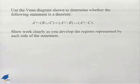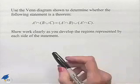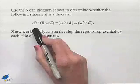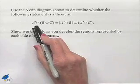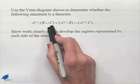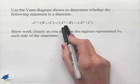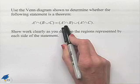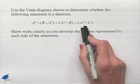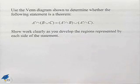In our next problem we're going to use Venn diagrams to prove a distributive law. Use the Venn diagram shown to determine whether the following statement is a theorem: A complement intersected with the union of B and C equals A complement intersected with B, union A complement intersected with C. We want to show our work clearly as we develop the regions represented by each side of the statement.